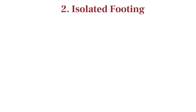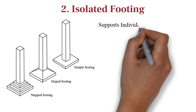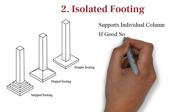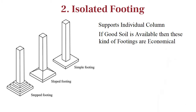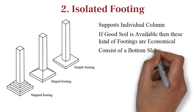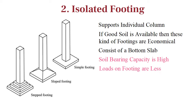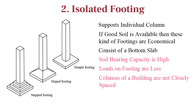Second, isolated footing. This type of footing supports an individual column, that's why it is called isolated footing. If good soil is available, then these kind of footings are economical. The isolated footings essentially consist of a bottom slab. Generally, these type of footings are used when the soil bearing capacity is high, loads on footing are less, and columns of a building are not closely spaced.